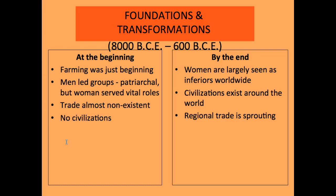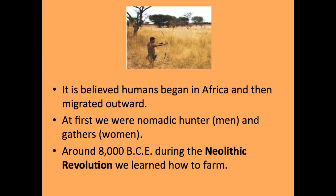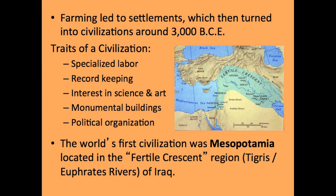By the end of this time period, by 600 BCE, we're moving into the Classical Age — civilizations exist, the patriarchal social structure is firmly in place with women largely seen as inferiors, and you're beginning to see the concept of regional trade. It's believed that humans began in Africa and then migrated outward. At first they were nomadic hunter-gatherers, and around 8,000 BCE is when we start to see signs of the Neolithic Revolution — also known as the Agricultural Revolution — where human beings are learning to farm.